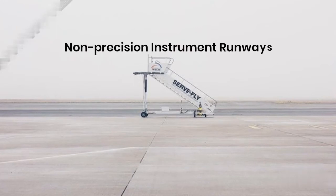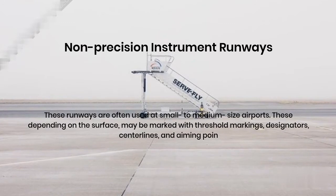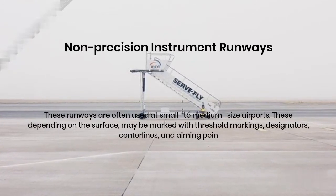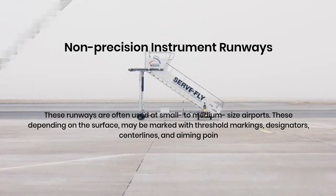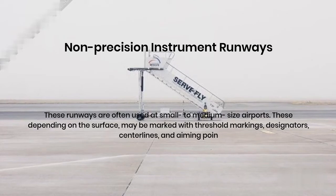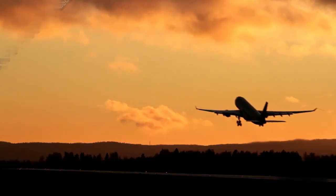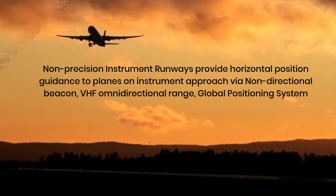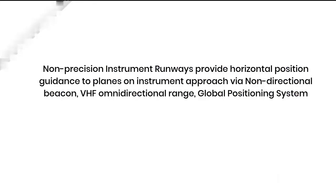Non-precision instrument runways are often used at small to medium size airports. Depending on the surface, they may be marked with threshold markings, designators, centerlines, and aiming point. Non-precision instrument runways provide horizontal position guidance to planes on instrument approach via non-directional beacon, VHF omnidirectional range, or global positioning system.